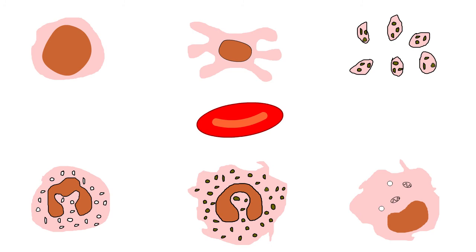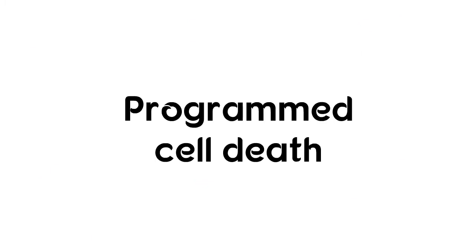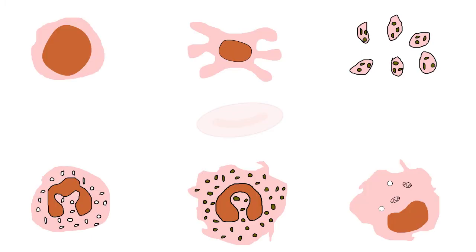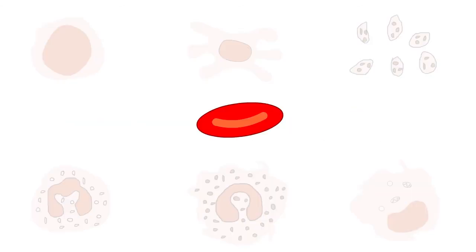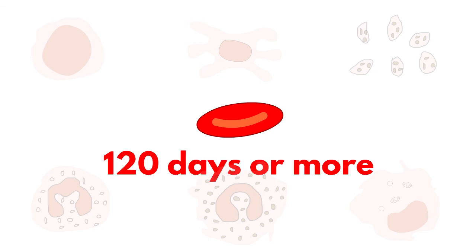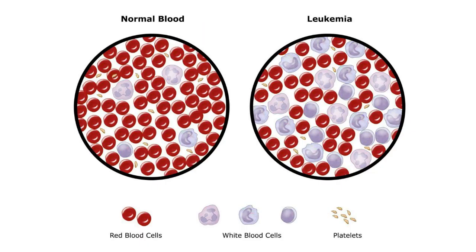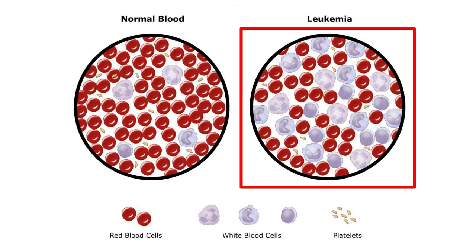Each of the blood cells produced by hematopoiesis has a characteristic lifespan, and then dies by a process called programmed cell death. White blood cells have the shortest lifespan, sometimes surviving just a few hours to a few days, while red blood cells can last up to 120 days or more. If programmed cell death fails to occur, a leukemic state may develop, with uncontrolled growth of white blood cells in the body.